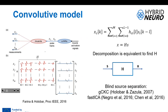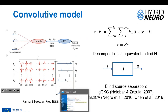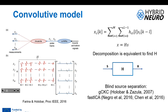How do you obtain H? There are different approaches. One proposed approach is blind source separation, which creates a decomposition that optimizes sparsity of the signal, using different cost functions corresponding to different algorithms — for instance, the gradient convolution kernel compensation proposed by Alex, and algorithms based on independent component analysis.